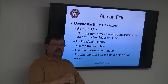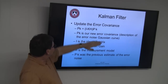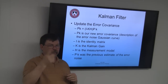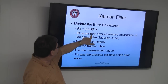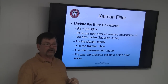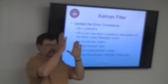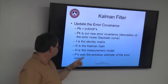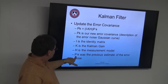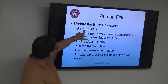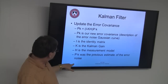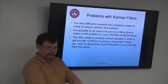The final step updates the error covariance: P_k = (I − K_k × H) × P_{k-1}. I is the identity matrix — the matrix equivalent of one. K_k is the Kalman gain, H is the measurement model, and P_{k-1} is the previous error estimate. We're computing one-minus-the-Kalman-gain times the previous error, updating our error estimate for the next cycle. Then we loop back to the top and start the whole process over again.